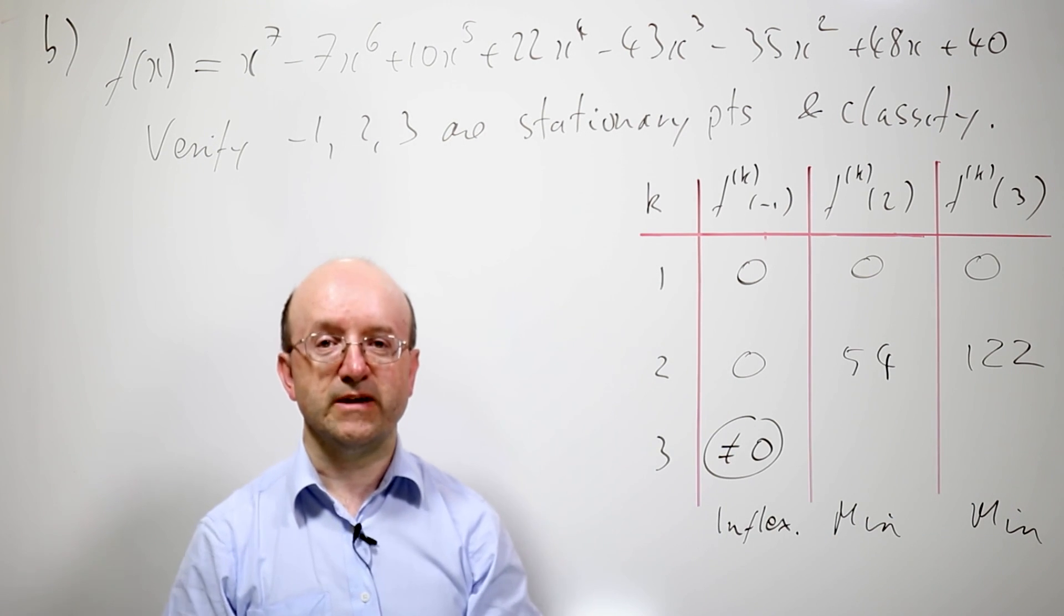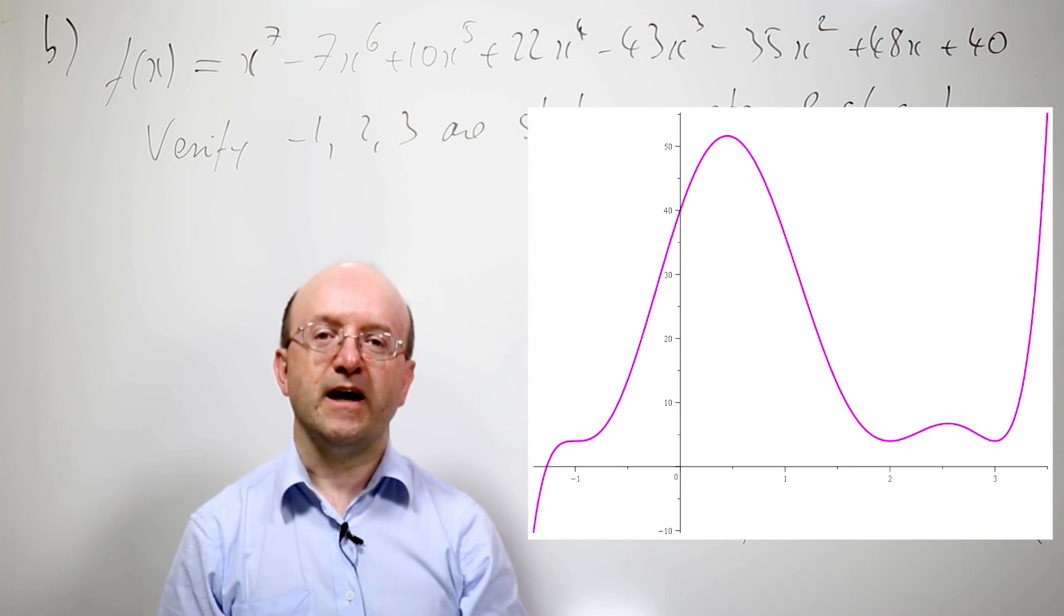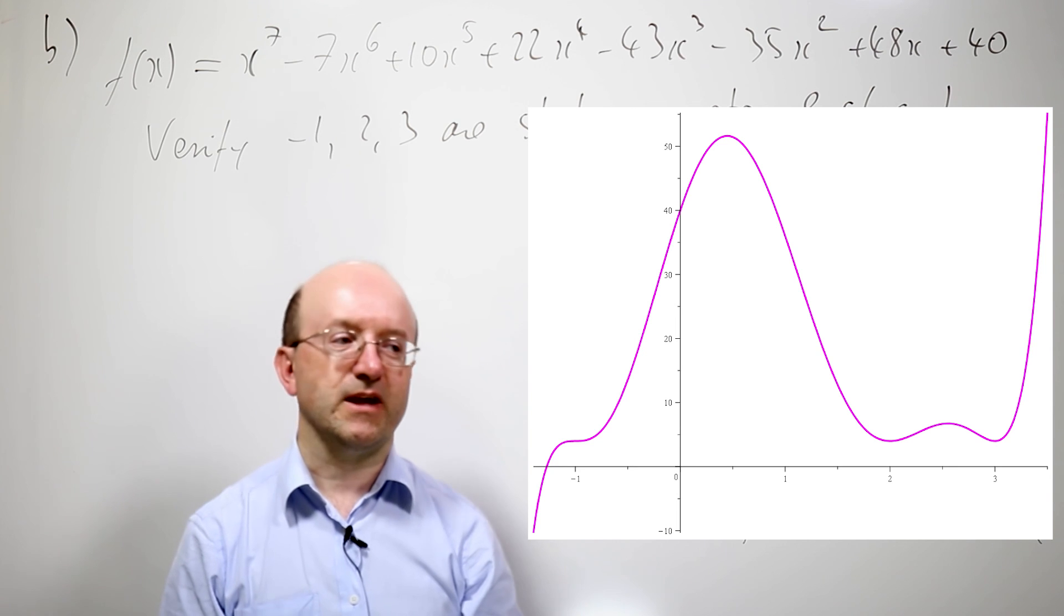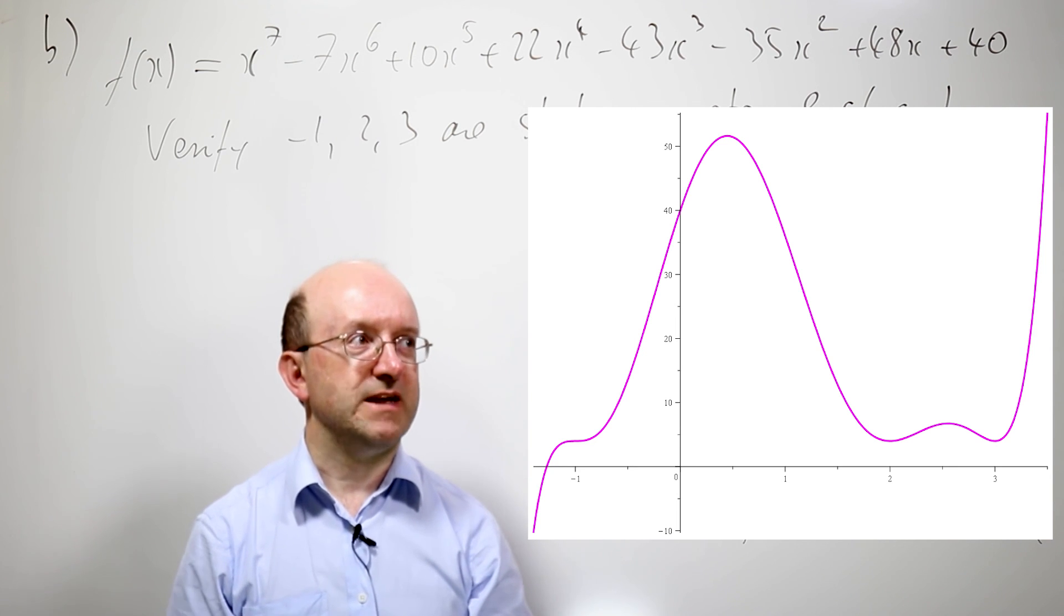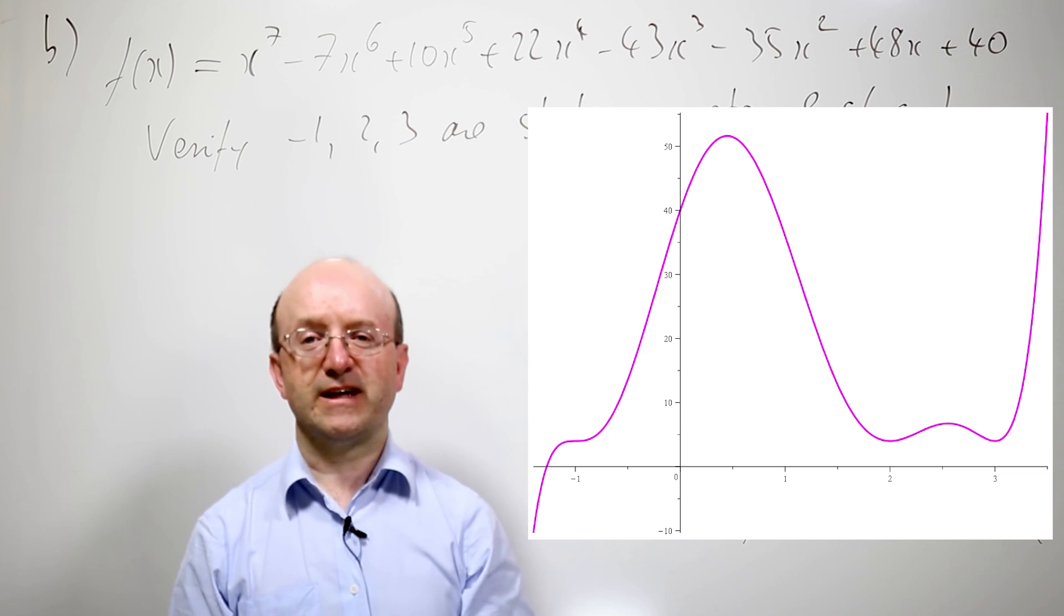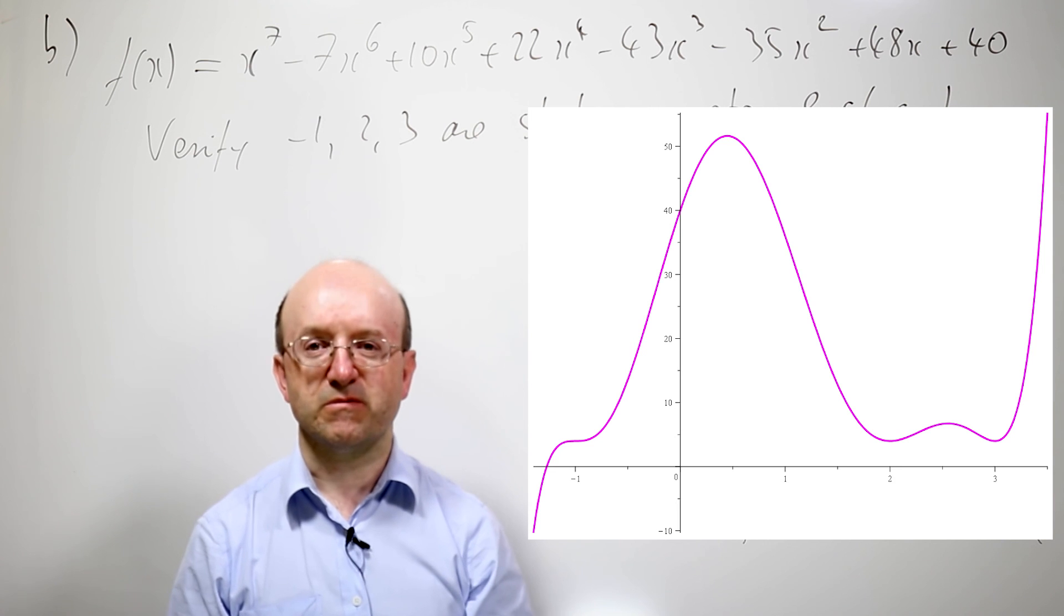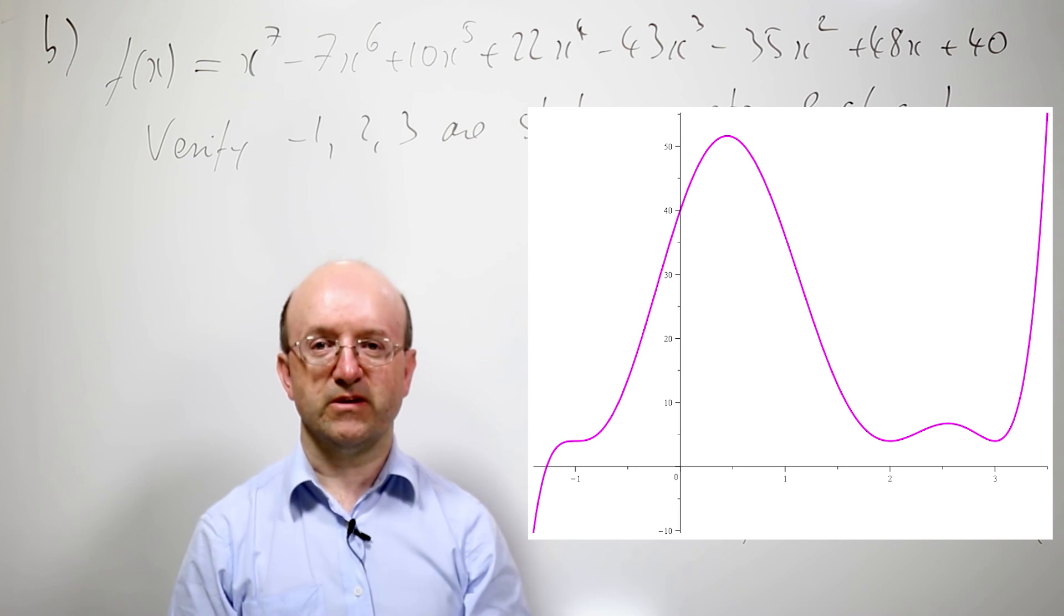So we have an inflection point and two minima, one at 2 and one at 3. And again, we plot the graph here. And if we look at the graph, we can clearly see, yep, there's the inflection point at minus 1 and the two minima at 2 and 3 with a maximum in between them. There must be a maximum in between these two minima. That follows from the stuff we did in the first year on things like Rolle's theorem and the mean value theorem.